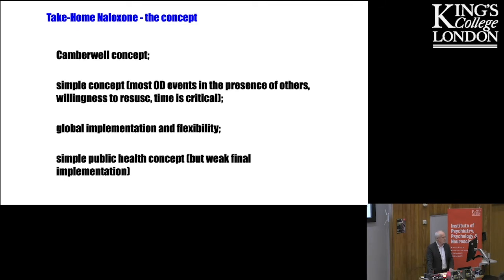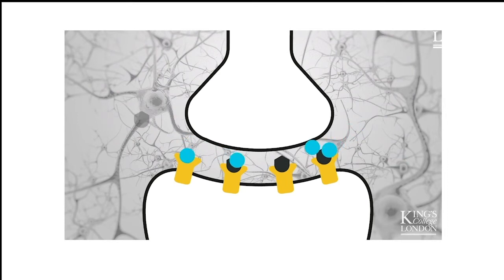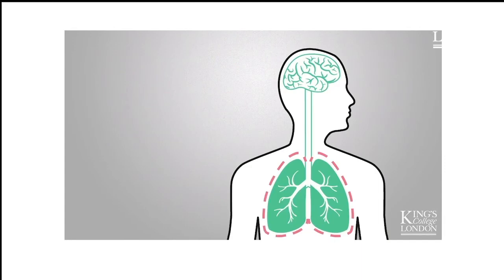What does naloxone actually do? Going back to our animation, we can see that the naloxone — and we all know that naloxone is blue — it appears at the opiate receptor where it displaces the heroin and thereby essentially just restores the normal function of signals for breathing.